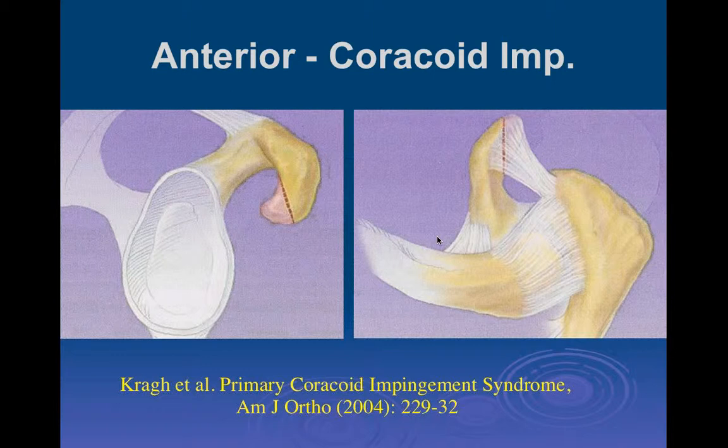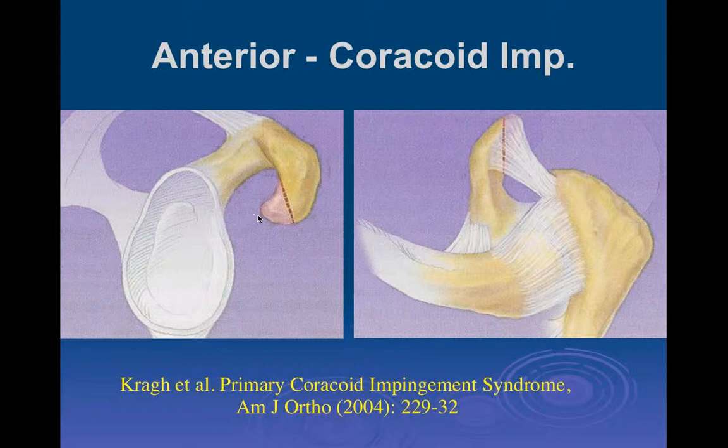The next form of impingement is anterior impingement, or coracoid impingement. This is typically seen in athletes who do a lot of cross-body motion with their shoulder, especially discus throwers. It typically occurs in individuals who have an abnormal configuration of the coracoid process, where the coracoid process is more inferiorly and medially placed than normal.